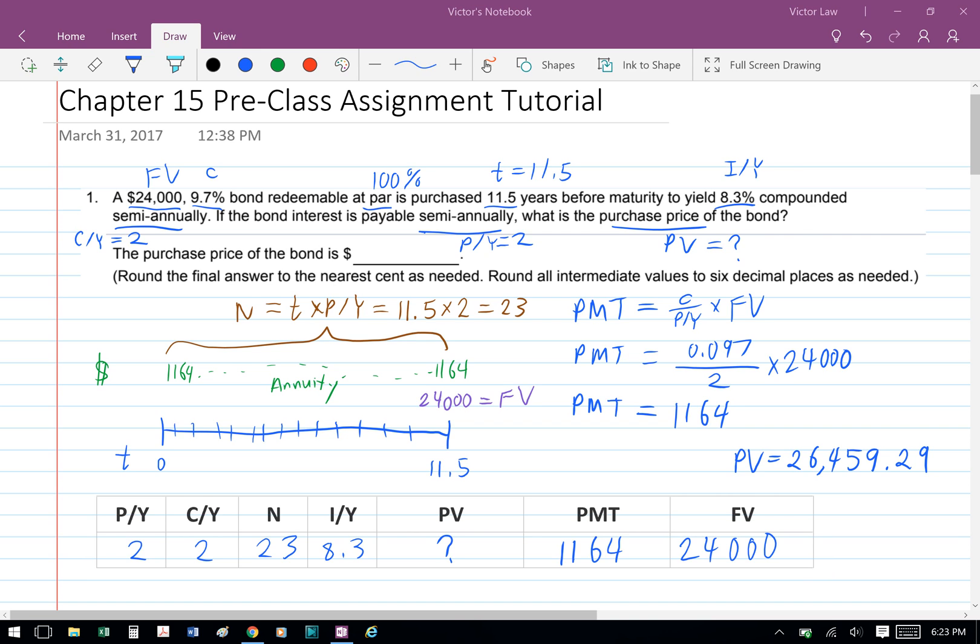And we compute for PV, so we have PV of 26,459.29 and that's question 1.